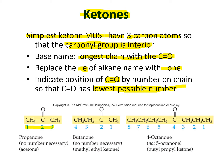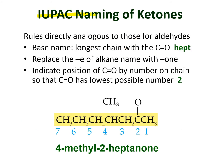The smallest ketone is the three-carbon propanone, with common name acetone — no position number is needed since the keto group is always in the center. The four-carbon ketone is butanone, with common name methyl ethyl ketone. An eight-carbon example with the keto group at carbon four is called 4-octanone.